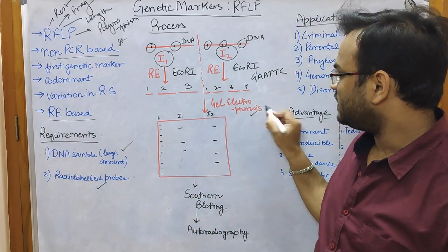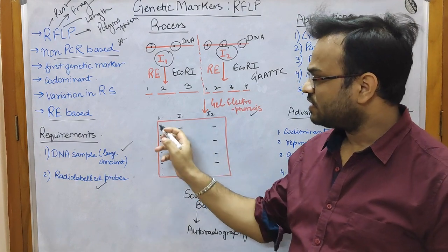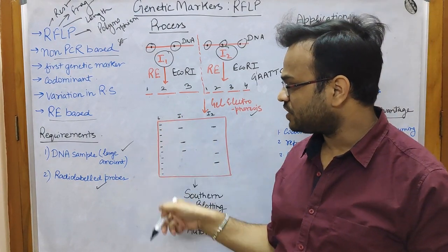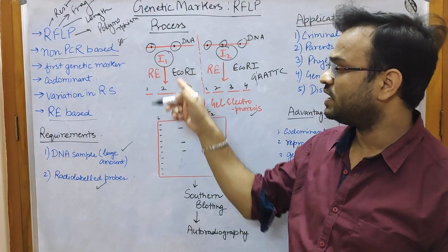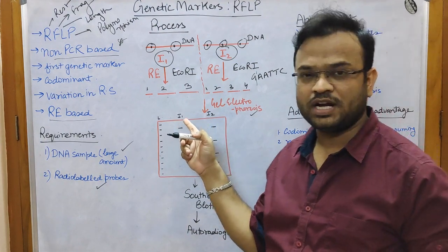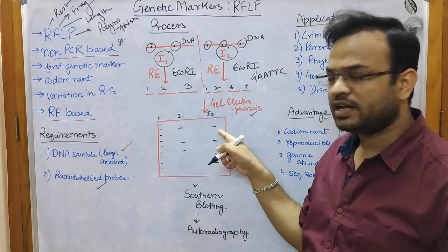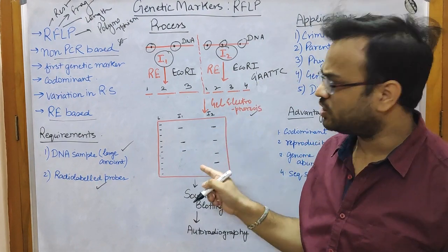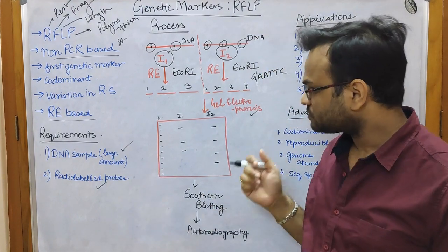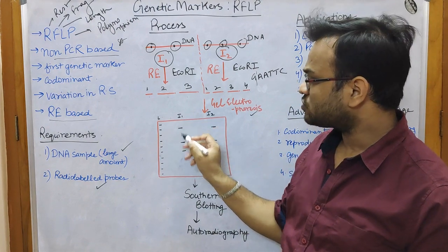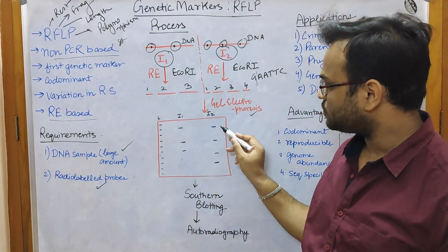The next step is gel electrophoresis — specifically agarose gel electrophoresis. A ladder is loaded in the first well, the fragments from Individual 1 are loaded in the second well, and the fragments from Individual 2 in the third well. After the gel resolves completely, we see three fragments for Individual 1 and four fragments for Individual 2, as expected.